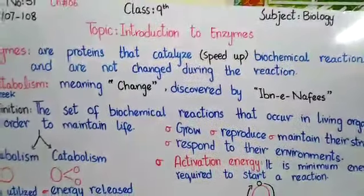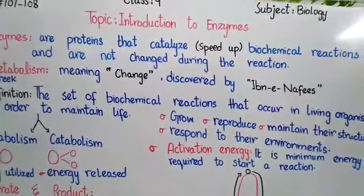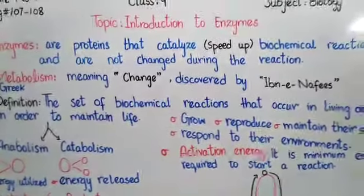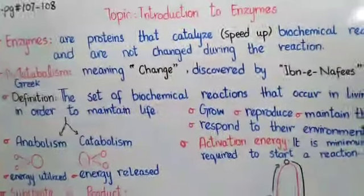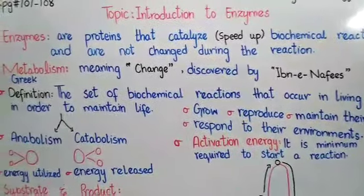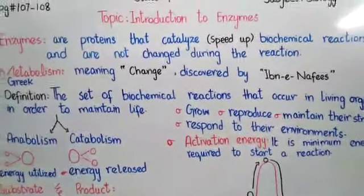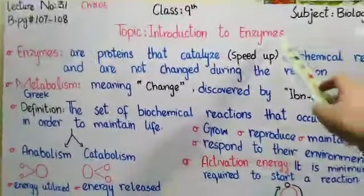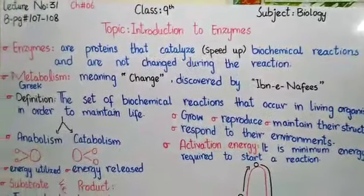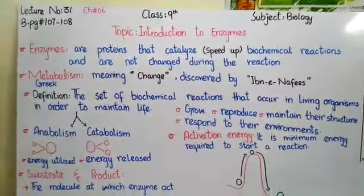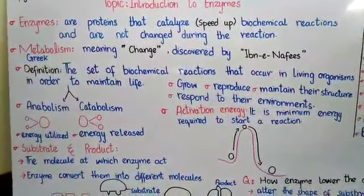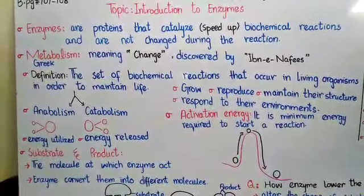In the human body there are different chemical reactions and processes, and a question arises: what controls these reactions? In 1833, a French chemist discovered that vital forces drive these chemical reactions — and they are enzymes. Enzymes speed up these reactions in your body. For example, if a reaction normally takes 5 minutes, enzymes can complete it in 2 minutes.